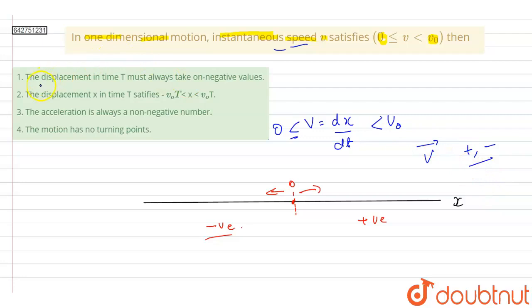So now let us look at option one: the displacement in time t must always take on negative values. Now this is not true as we can see that displacement can also take positive values if the particle is moving from this point to the positive x axis then this will be x2 and let's say this will be x1. So in this case the displacement will be x2 minus x1 that will be positive.